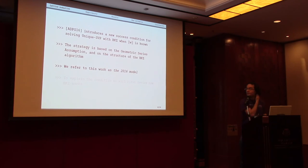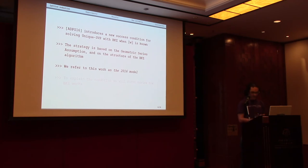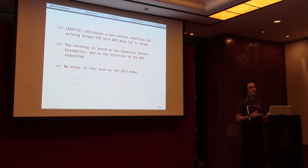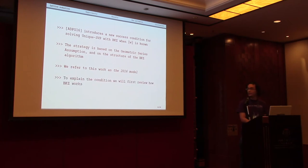But then hope happens. In 2016, a different success condition is presented for solving the unique SVP problem using BKZ. Their strategy looks at the inner workings of BKZ and at what the geometric series assumption (GSA) says about how good a basis BKZ will recover. We refer to this as the 2016 model, and to explain how it works we first need to review a little bit about BKZ.